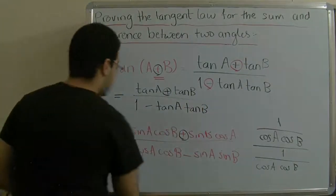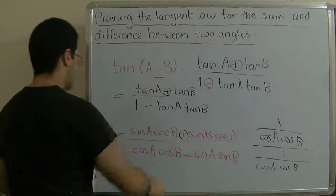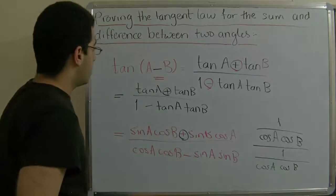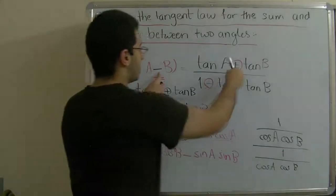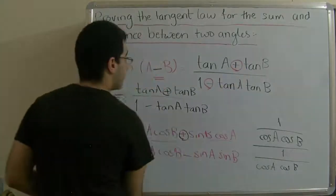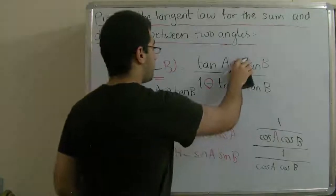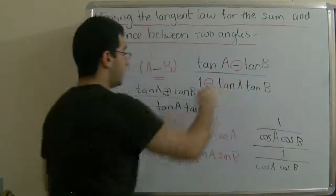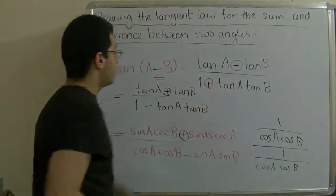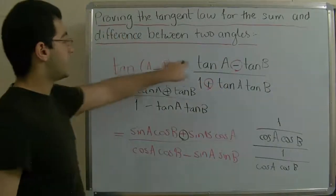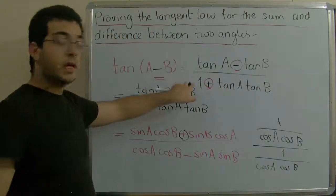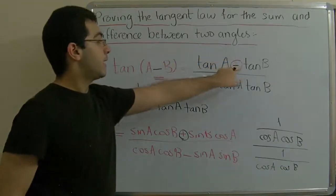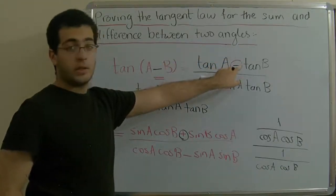If we have a negative sign instead of a positive sign, it will not change in the numerator — this will be a negative — while in the denominator it will be plus. This is because tangent equals sine over cosine: in the cosine law the sign changes, while in the sine law it does not change.